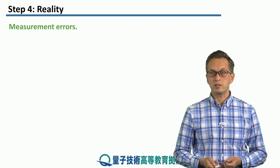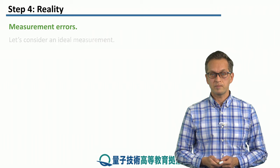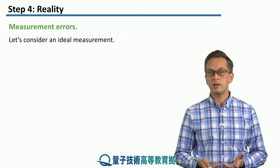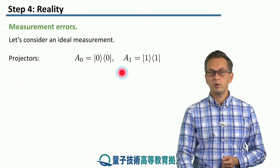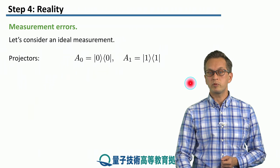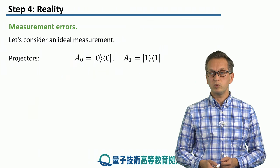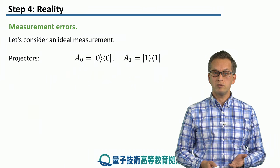Next, measurement errors. How do we model measurement errors? Well, how do we model ideal measurement? Usually we consider a simple case of projective measurements. We have two projectors, which we call A0 and A1. A0 projects onto the zero state and A1 projects onto the one state.